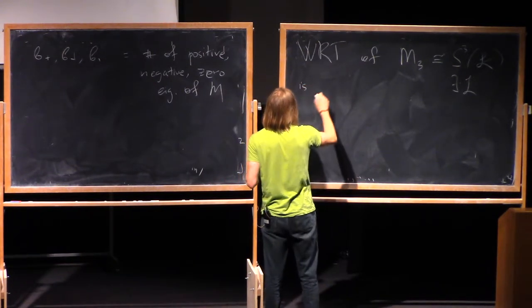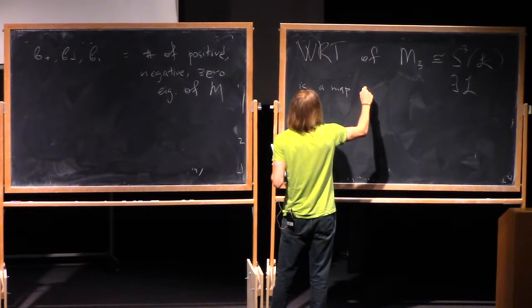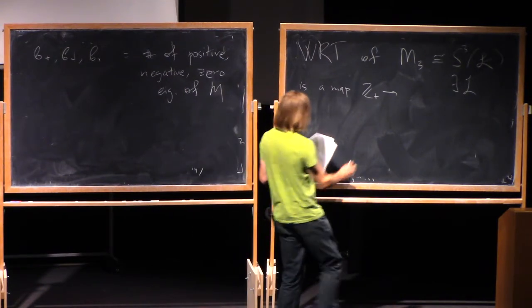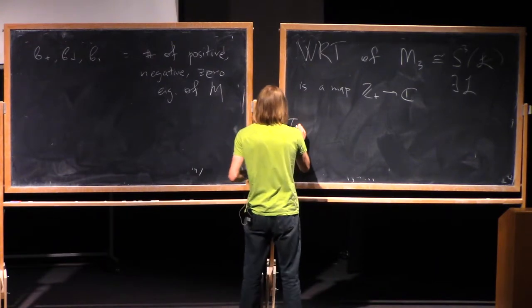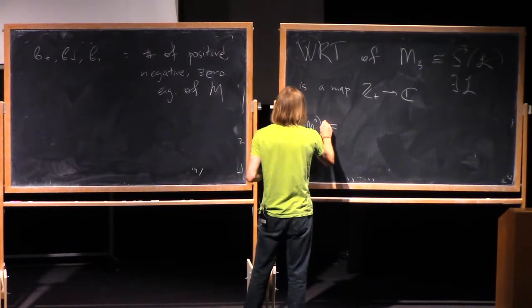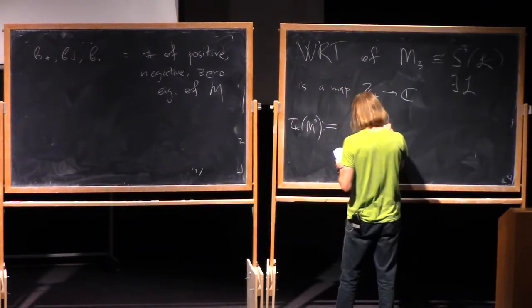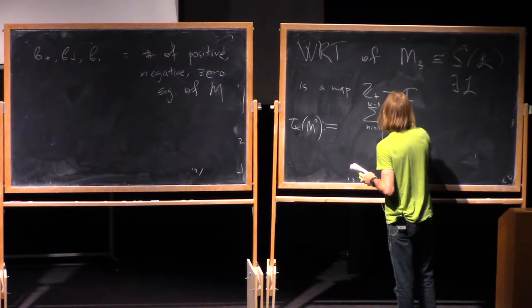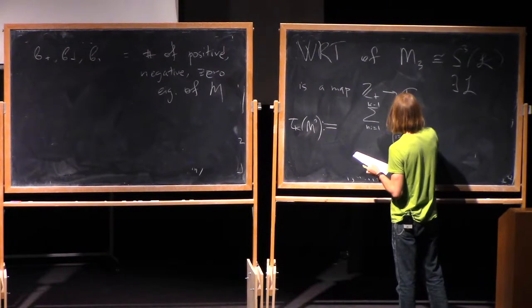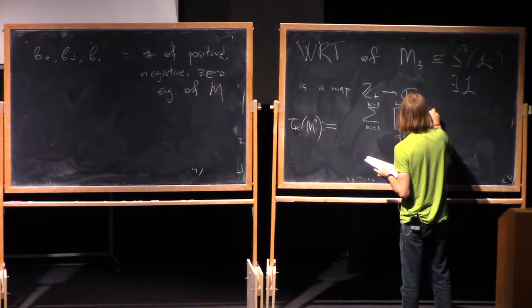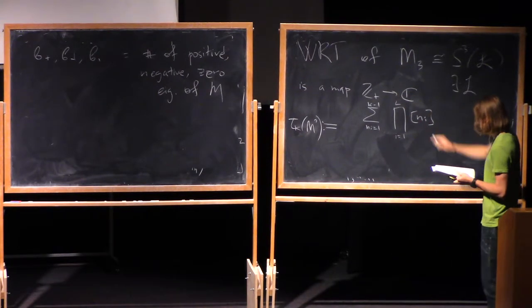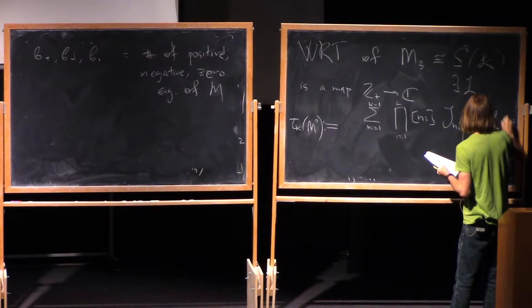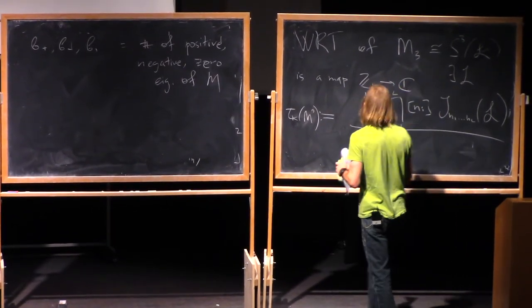So WRT invariant of three-manifold, which is homeomorphic. So for any three-manifold I can find a Dehn surgery. And so there always exists L such that M3 is a Dehn surgery on L. So it can be used as a map from a set of positive integers. Well, this is not most generic definition, but let me define it so far just like this, to complex numbers. And it's given explicitly by the following formula. So for each color, I do a summation from one to K minus one. Then I take a product of from i to L.